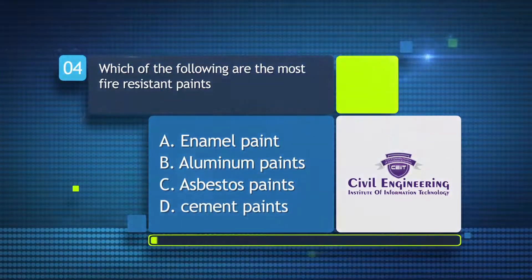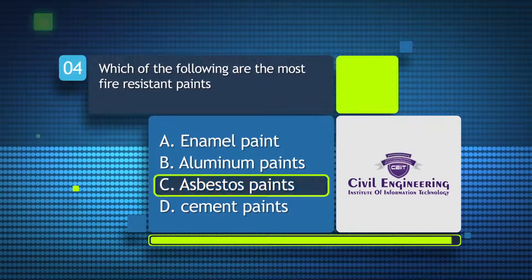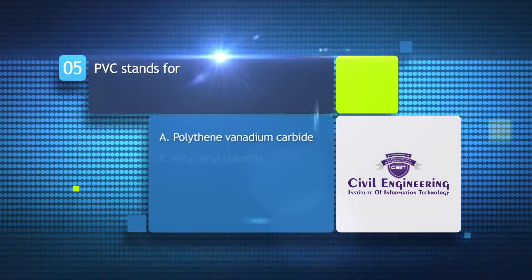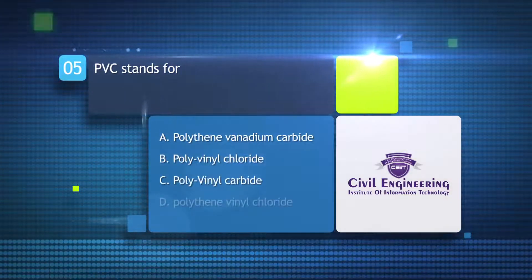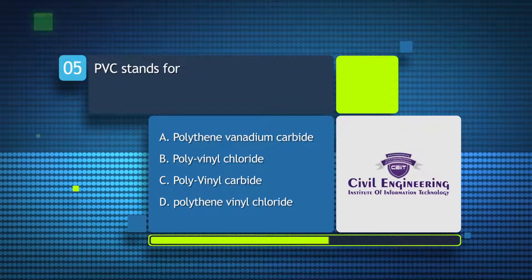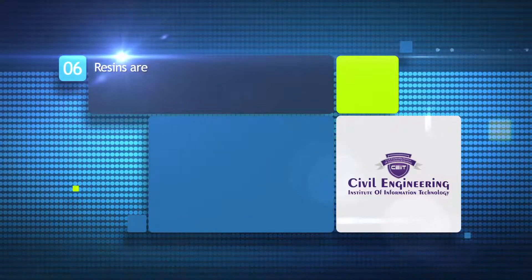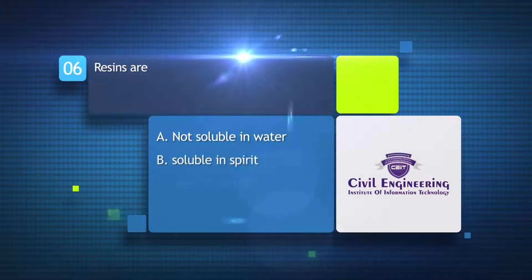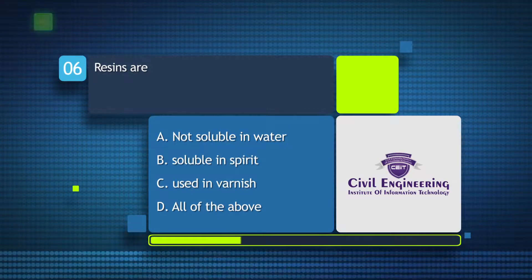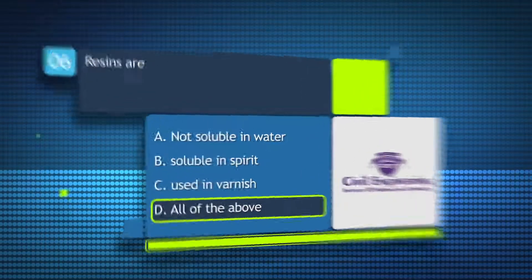PVC stands for: A) polythene vanadium carbide, B) polyvinyl chloride, C) polyvinyl carbide, D) polythene vinyl chloride. Resins are: A) not soluble in water, B) soluble in spirit, C) used in varnish, D) all of the above.